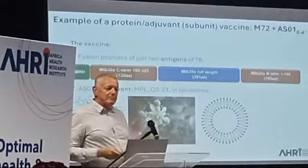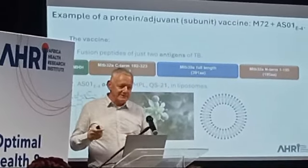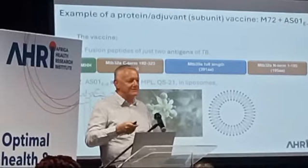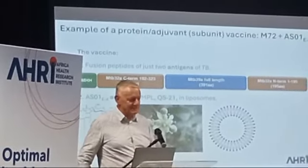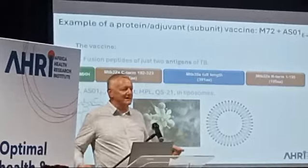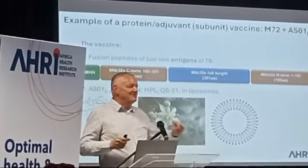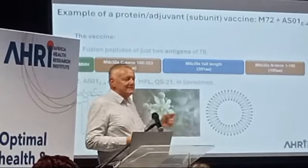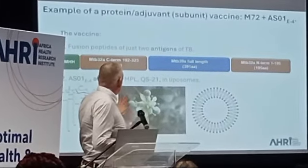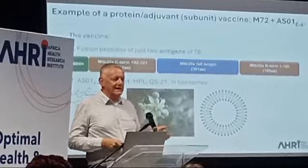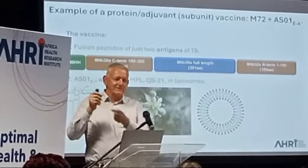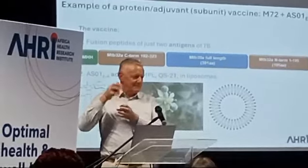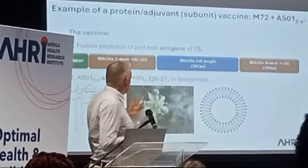And then we put with that an adjuvant. An adjuvant is something that stimulates the immune response in the direction that you want — you want it to do the thing that protects against TB. For example, this adjuvant has got a molecule called MPL, that binds one of those receptors on cells that recognizes something as foreign — that TLR4, it's called.